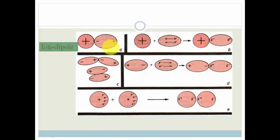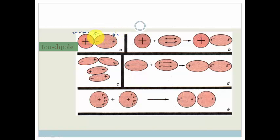The first type is an ion-dipole. Here is an atom that has lost an electron — it's become a positive ion, a cation. This is a molecule that already has a slightly negative and a slightly positive end. What happens is the slightly negative end is attracted to the positive cation, and this becomes an ion-dipole force. Please note that these molecules do not bond — they just come closer to each other.